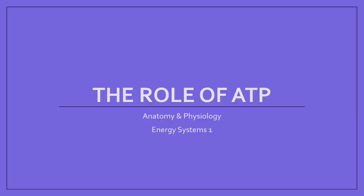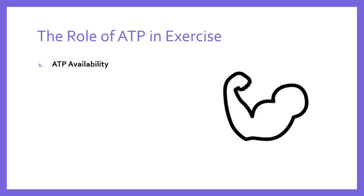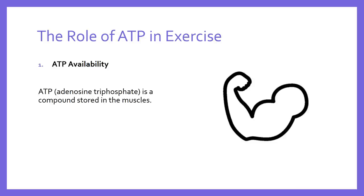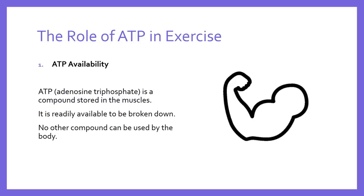This is a short video to introduce you to ATP — what it is, its importance, and its role in exercise. ATP stands for adenosine triphosphate, a compound stored in the body, specifically in the muscles, that has to be broken down to enable muscles to contract. Without ATP, there can be no contraction of muscles. The body cannot use any other compound to enable muscular contraction, so ATP is extremely important in exercise.